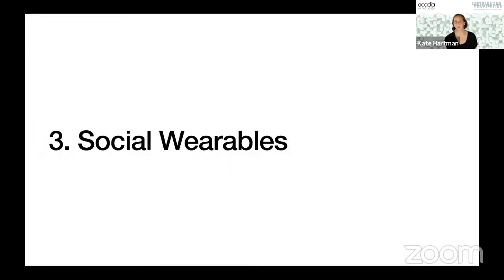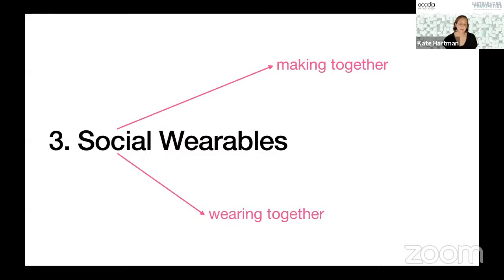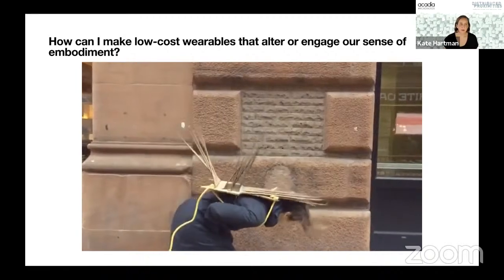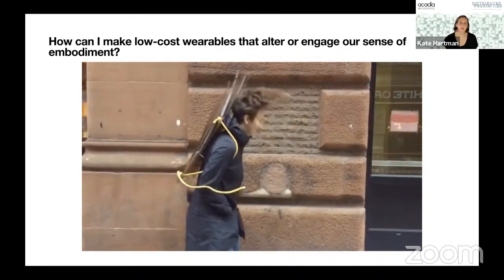Onto the realm of social wearables — this is where things get a little different. I mean social in terms of both making together and also wearing together. One thing I think about a lot in making these intricate wearable electronics projects is that they're really expensive and hard to make — they take a lot of time. It's not a good example for someone just getting started, and it's also hard to include a lot of people in the process. I began to think about how I could make low-cost items or engage our sense of environment.